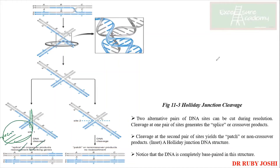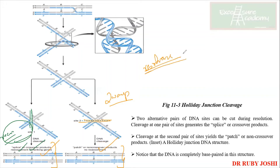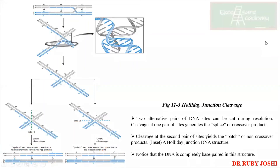Now let's see what happens when the cut is horizontal. In this case, one of the parental strands remains as it is and only a difference comes in the second strand. Because of this, the products are known as patch products or non-crossover products. These are your parentals; these are your recombinants. If given a frequency — more recombinants means vertical cleavage (splice/crossover products); more parentals means horizontal cleavage (patch/non-crossover products). This step is called resolution and the enzyme involved is called a resolvase.